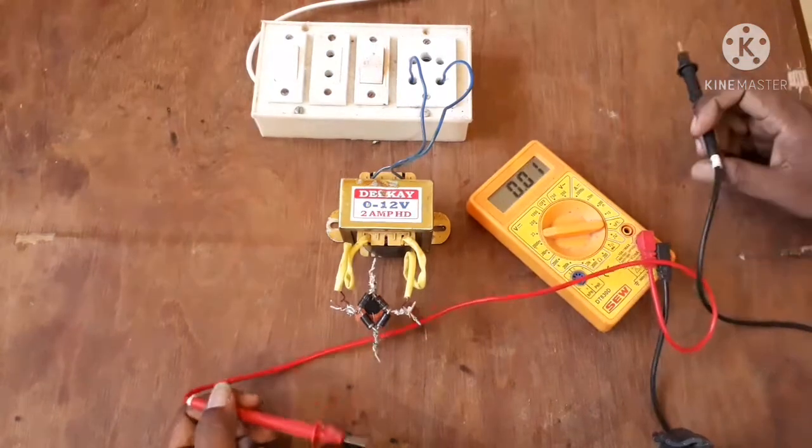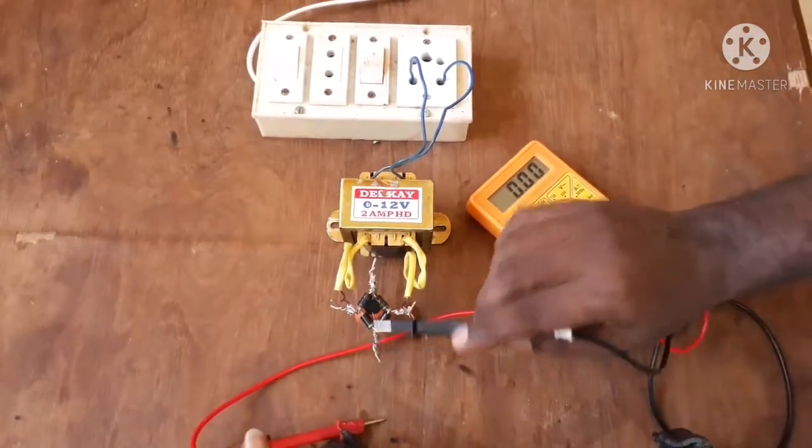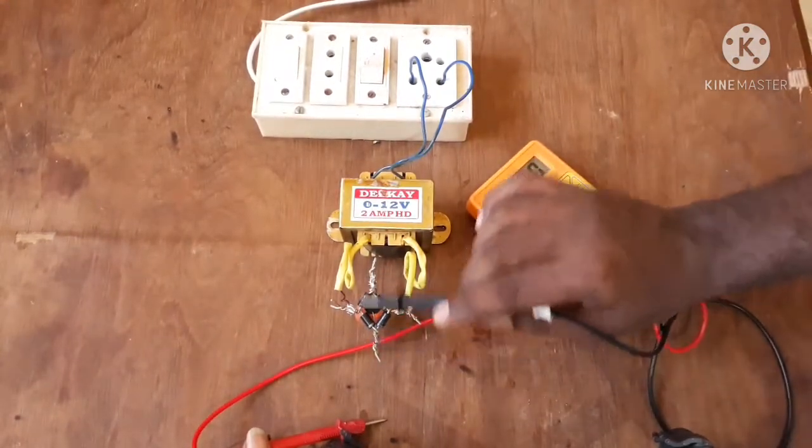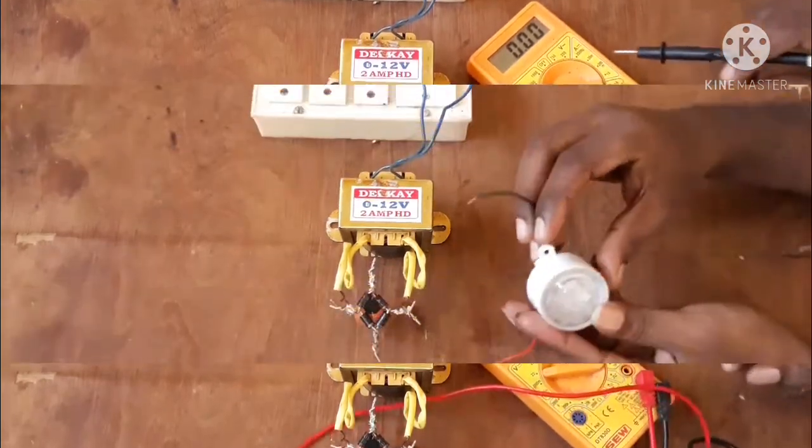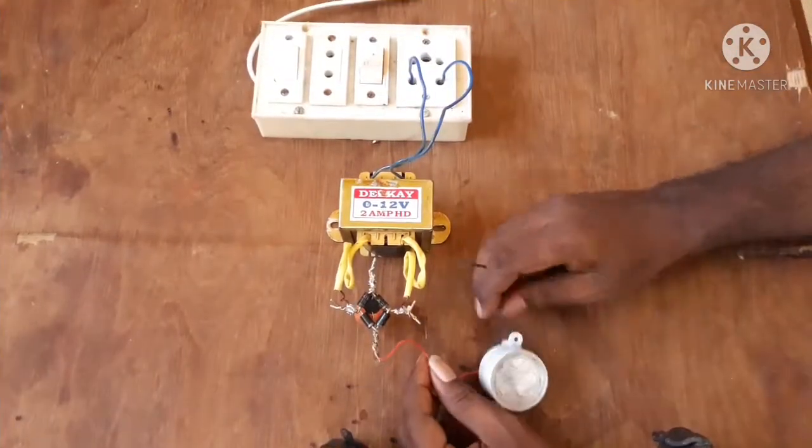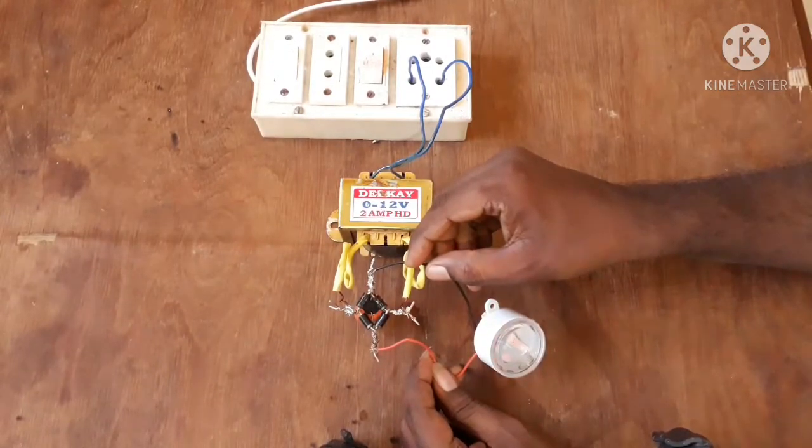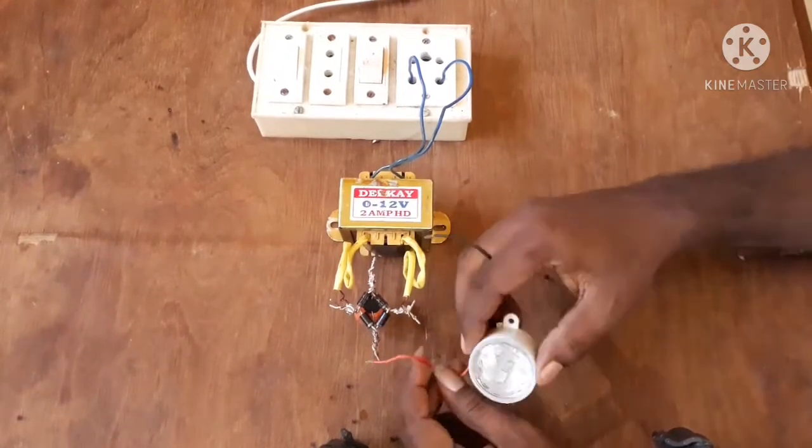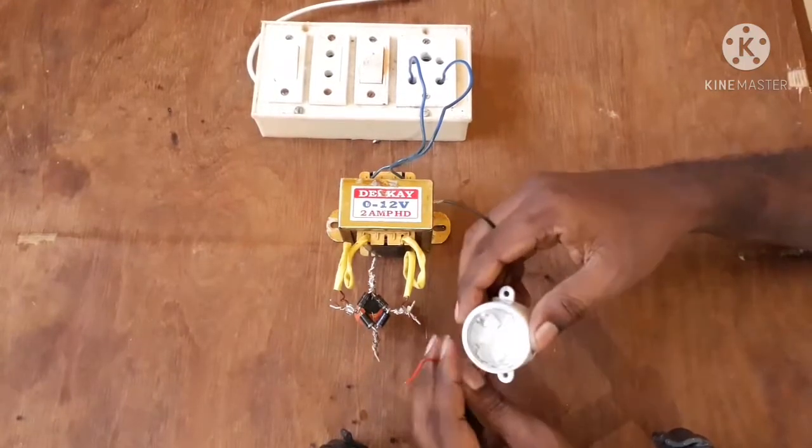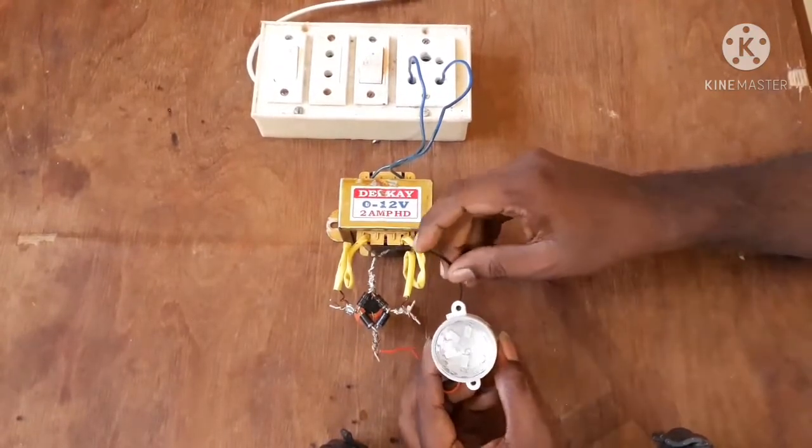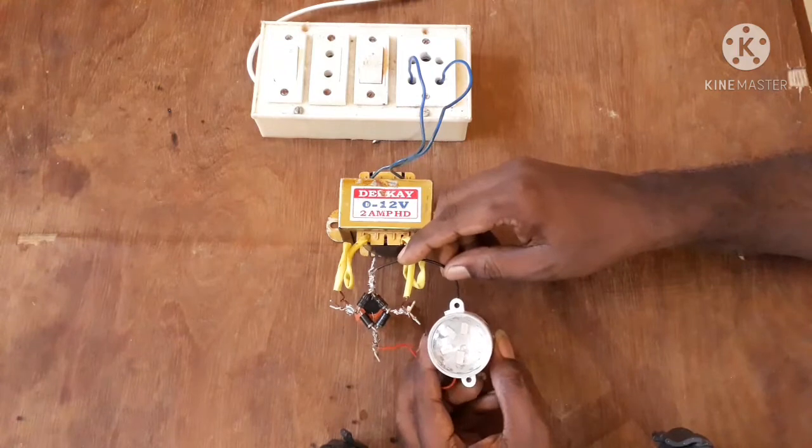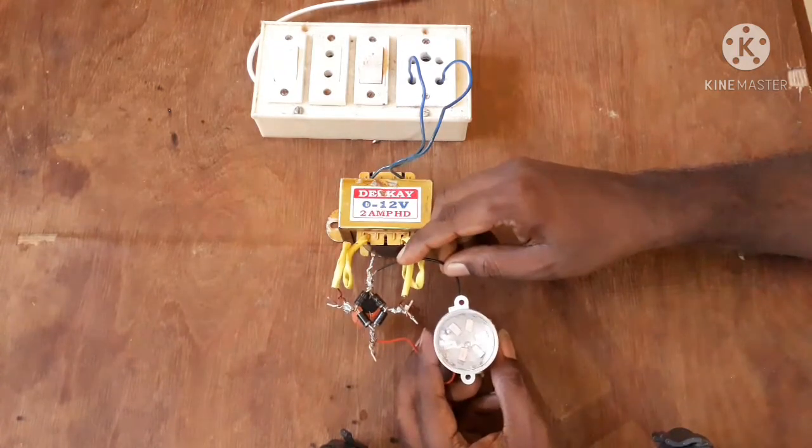Now we will fix this. We will connect 12 volt LED lights. You can fix the LED lights. This might be a blink light for a bike or car.